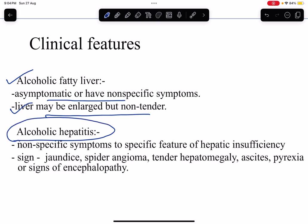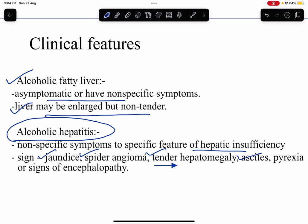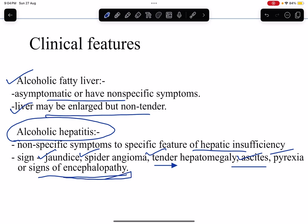In the second stage, alcoholic hepatitis: there are non-specific symptoms but also features of hepatic insufficiency. The patient may have jaundice, spider angioma (spider nevi), tender hepatomegaly — the liver is enlarged and painful to touch — ascites (accumulation of free fluid in the peritoneal cavity), pyrexia (fever), and signs of encephalopathy. Encephalopathy involves the brain and occurs as a complication when liver disease is decompensated.